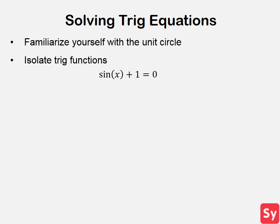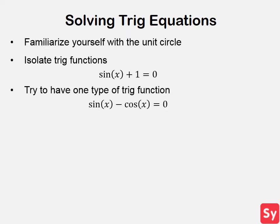Next, try to have only one type of trig function if possible. That means, for example, if you have sine of x minus cosine of x equals 0, try to manipulate the equation to have either all sine, all cosine, or turn it into another trig function.